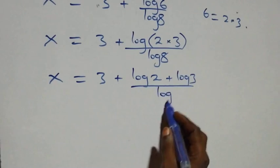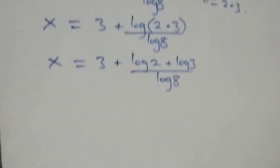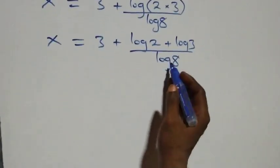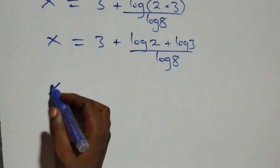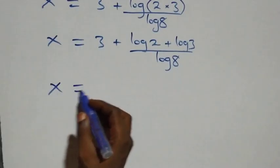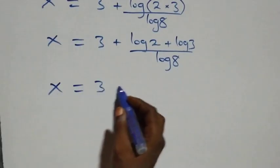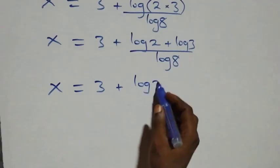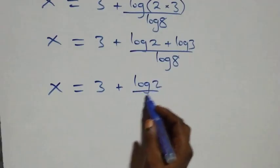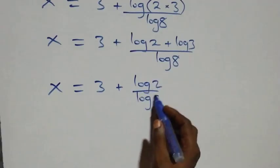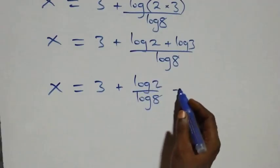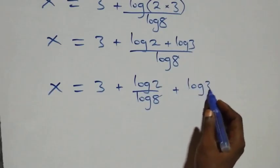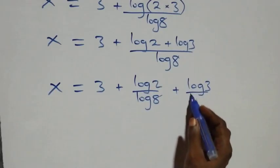We separate this into two fractions: x equals three plus log two over log eight plus log three over log eight.